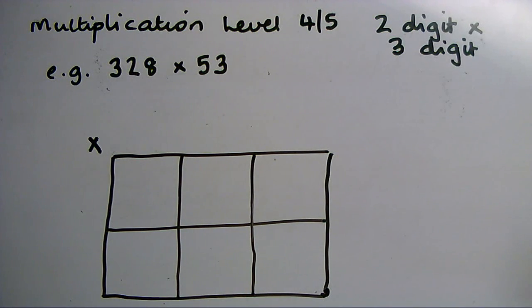Now we're going to multiply a three-digit number by a two-digit number, and the example I'm going to use is 328 times 53. I need a bigger grid this time because I've got hundreds to deal with in one of the numbers, and tens and units, but also in the other number, tens and units.